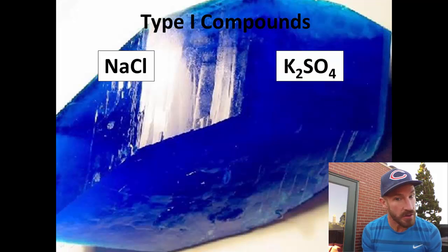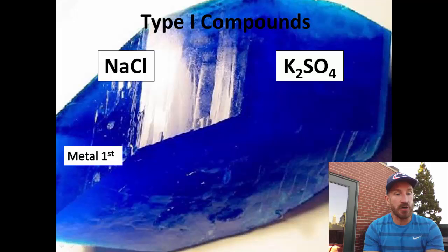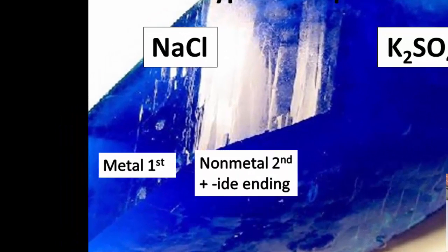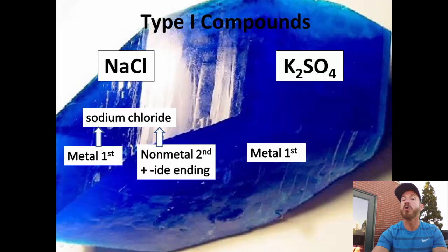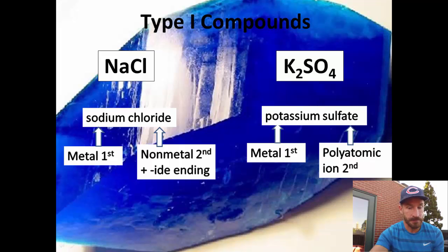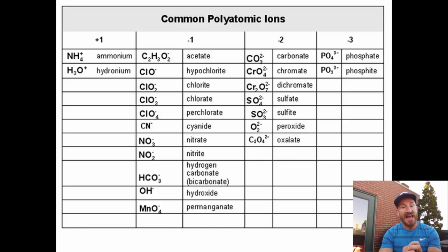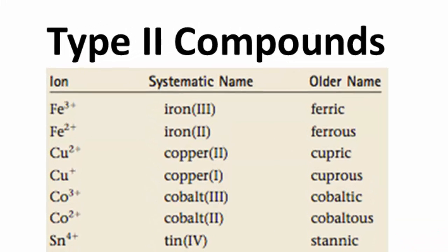Let's look at some type 1 compounds. We have NaCl and K₂SO₄ — they're type 1 compounds because the metal written first only has one charge. In NaCl, you name the metal first — sodium — then name the nonmetal second with an '-ide' ending, so we say sodium chloride. For K₂SO₄, we name the metal first, which is potassium, then name the polyatomic ion second — so that is potassium sulfate. Polyatomic ions are a group of atoms that together have a charge; most are negative, and you treat them the same as an atom. Anytime you have more than one polyatomic ion, put it in parentheses.